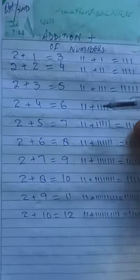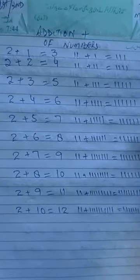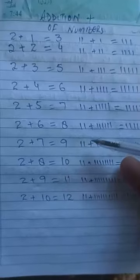Two plus five equals seven. Two lines plus five lines make seven lines. Two plus six equal to eight. Two lines plus six lines equal to eight lines.